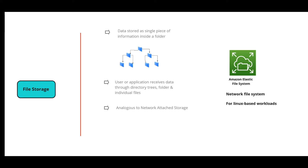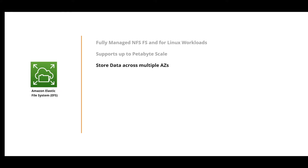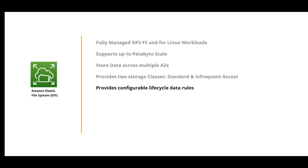EFS is a fully managed NFS file system especially for Linux workloads. It supports up to petabyte-scale data and is replicated across multiple availability zones within an AWS region. It provides two storage classes: Standard for frequently accessed data and Infrequent Access for data that won't be accessed frequently. It also provides configurable lifecycle rules — a set of rules defining actions applied to data stored in the file system.